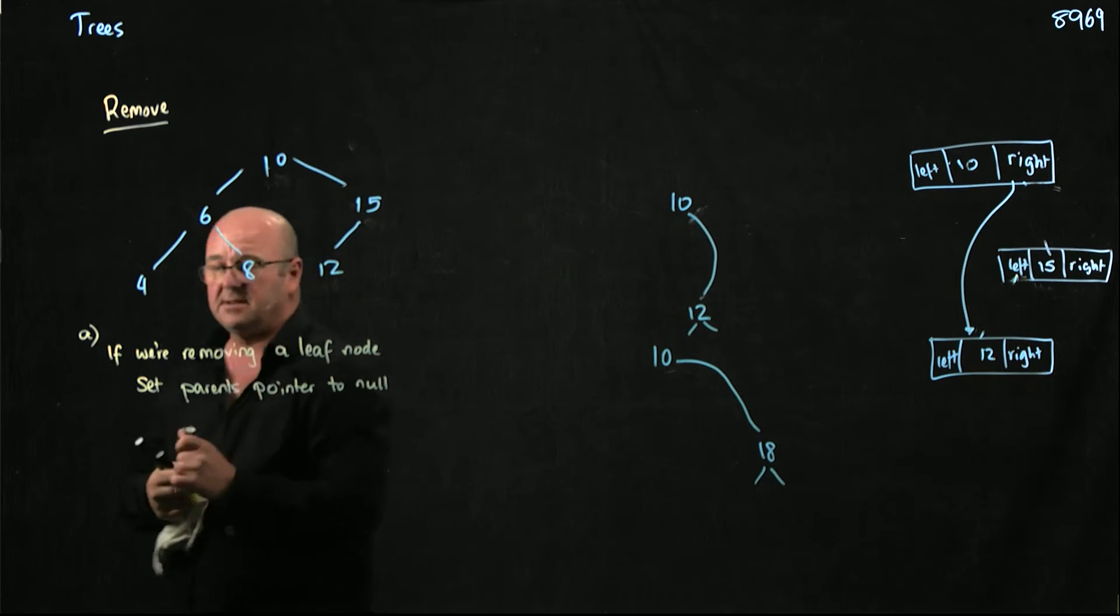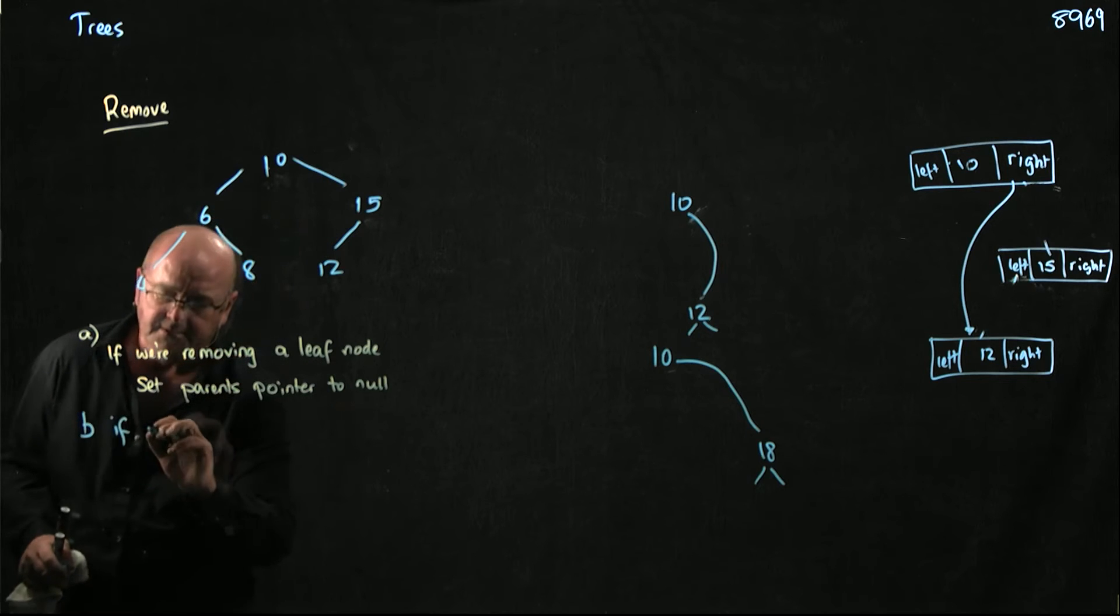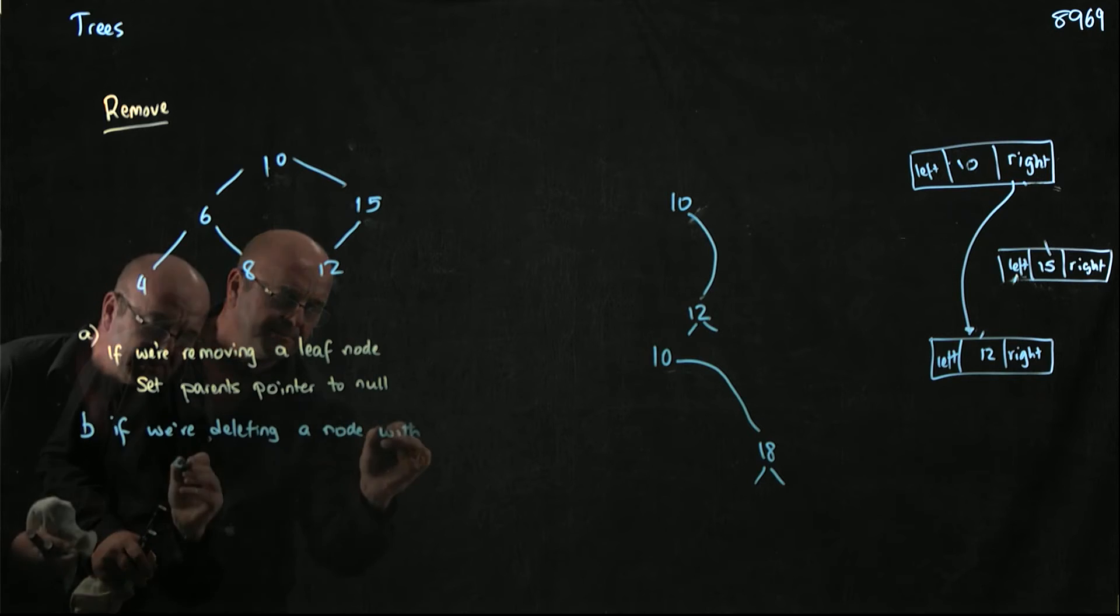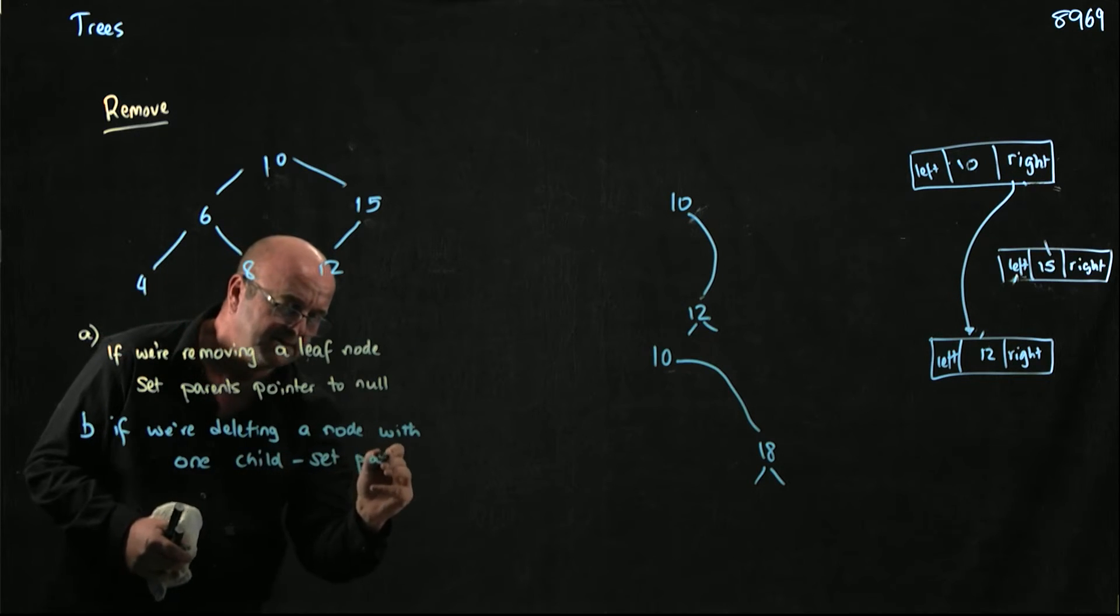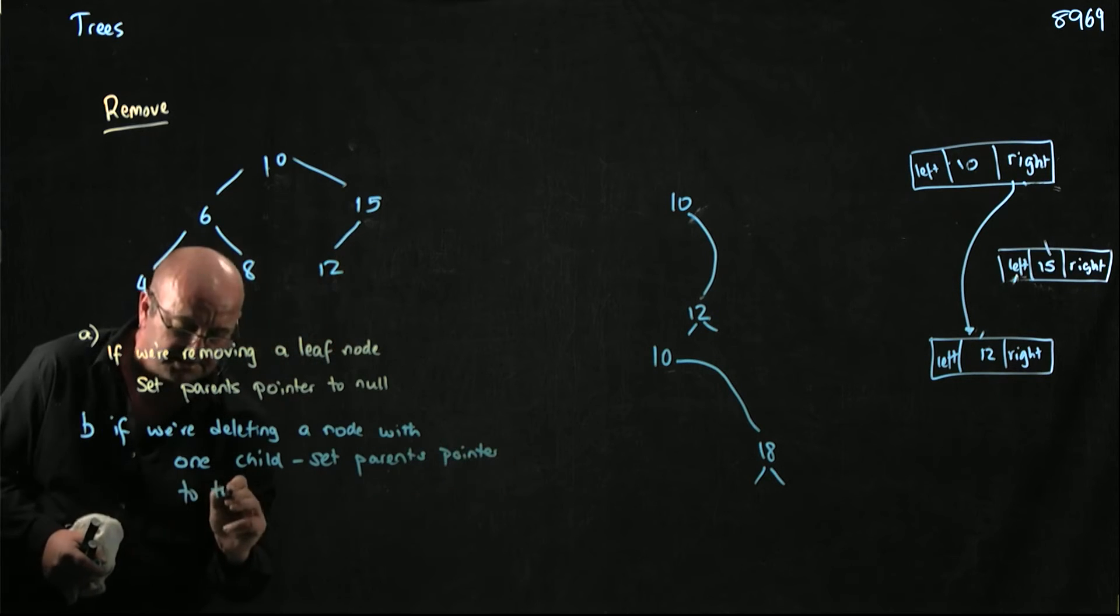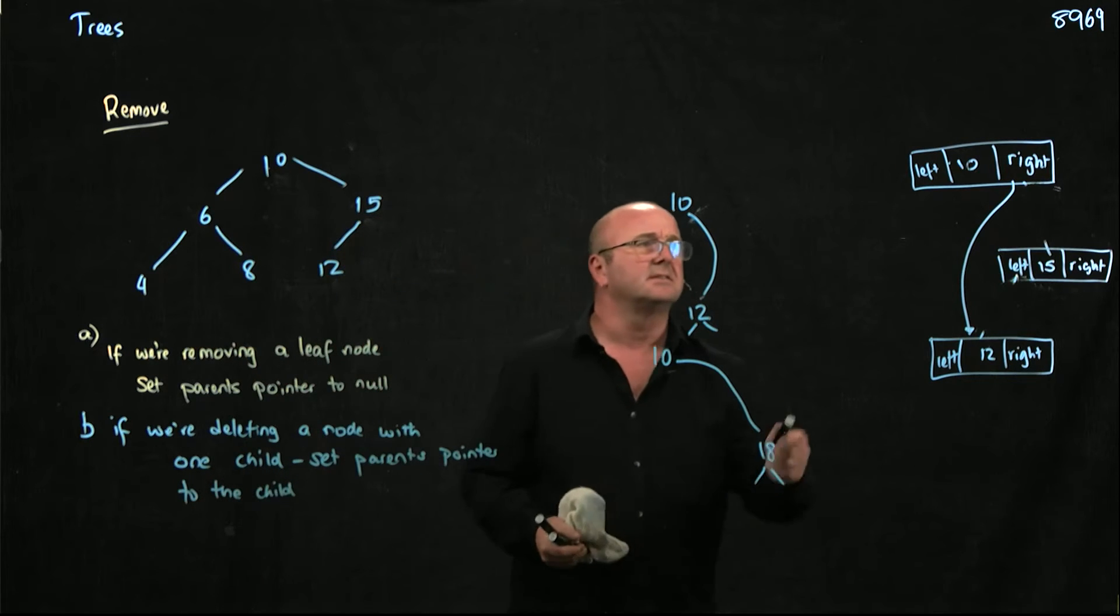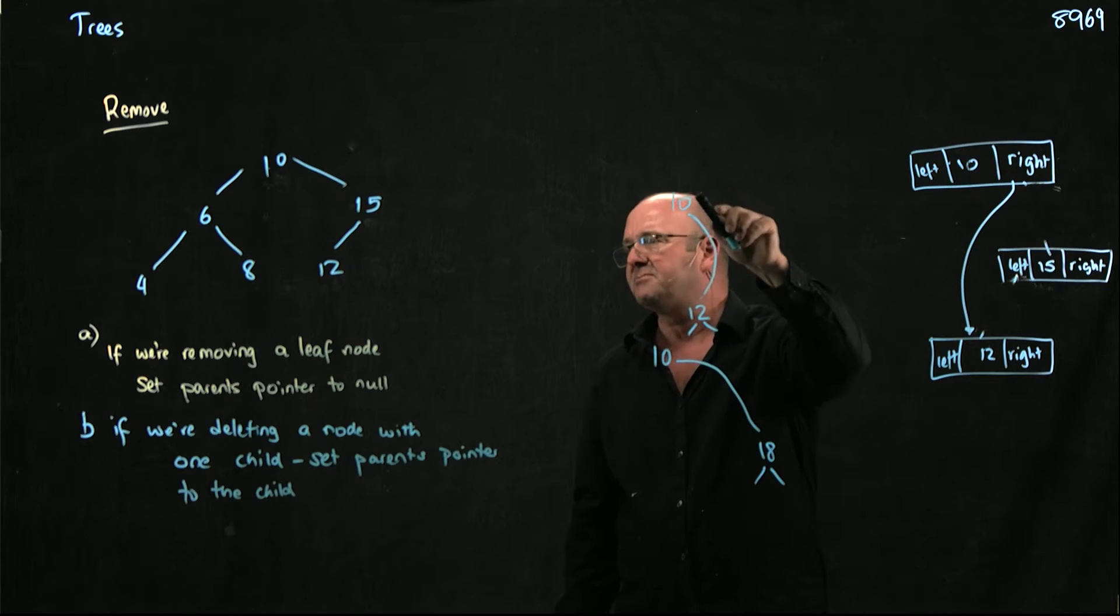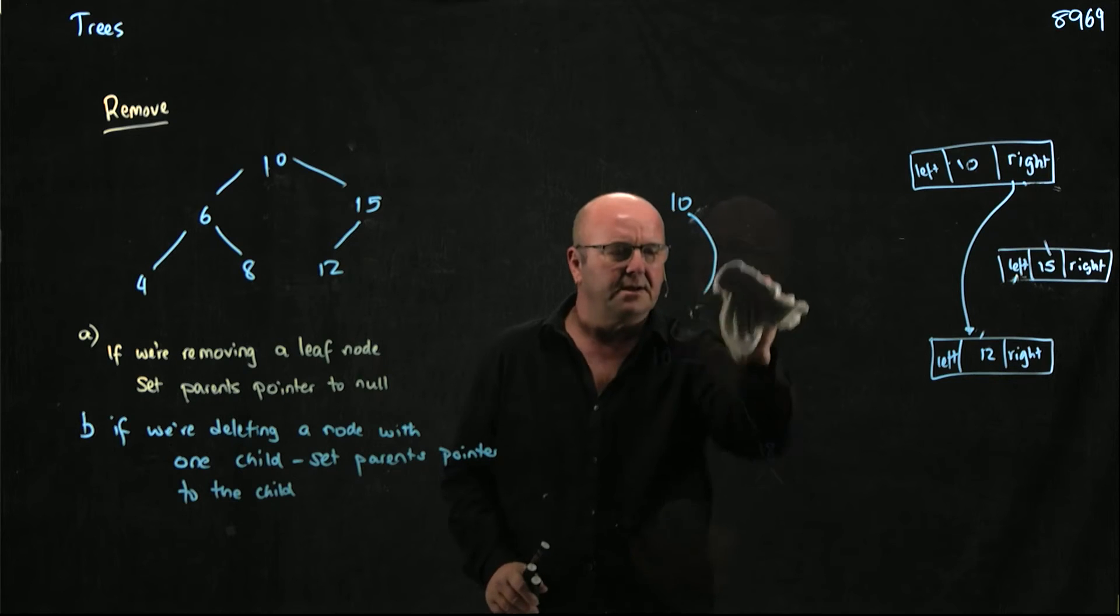So B, if we're deleting a node with one child, set the parent's pointer to the child. And so all you have to make sure is you set the parent's the same pointer. So if the 15 is the parent's right child, you set the right pointer of the parent to its child.